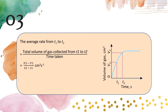The third method is the average rate of reaction from T1 to T2. The total volume of gas collected from T1 to T2 is between V1 and V2. So the formula is V2 minus V1 over the time taken between them, which is T2 minus T1. We will see an example for this type of calculation.